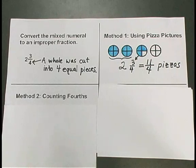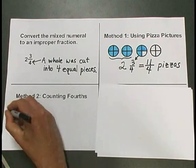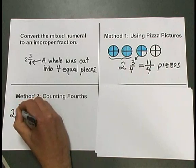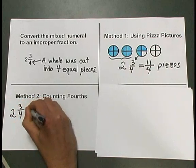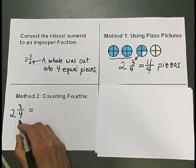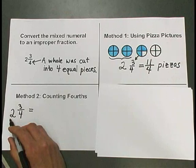The second method I call counting fourths. We can take our mixed numeral, 2 and 3 fourths, and I can think of the whole number part and the fraction separately here.